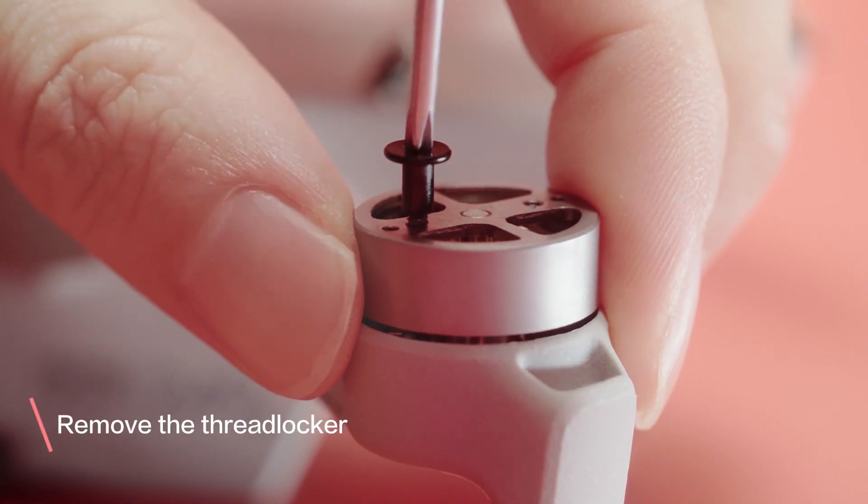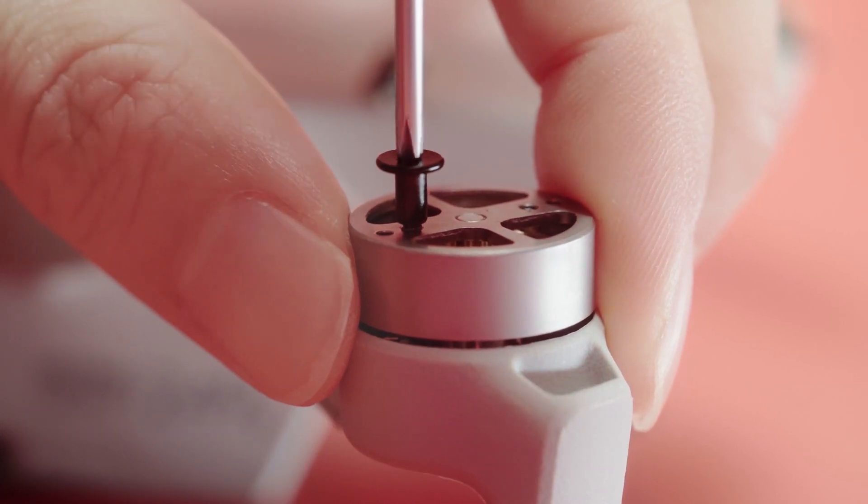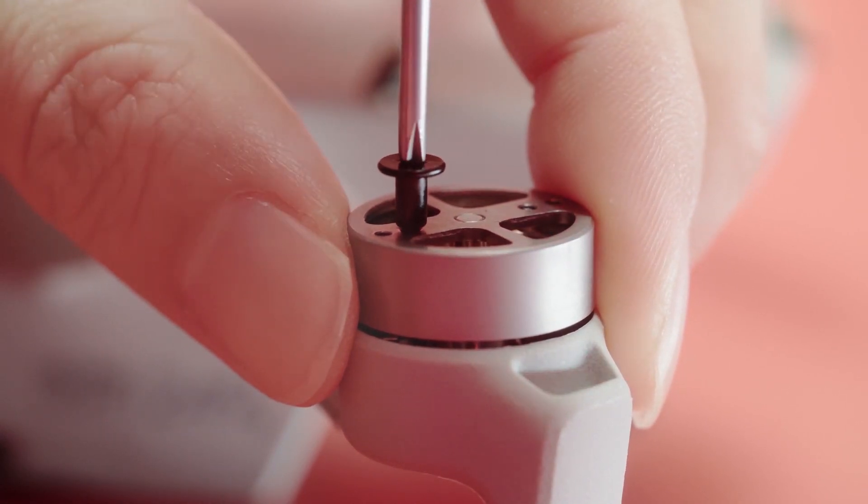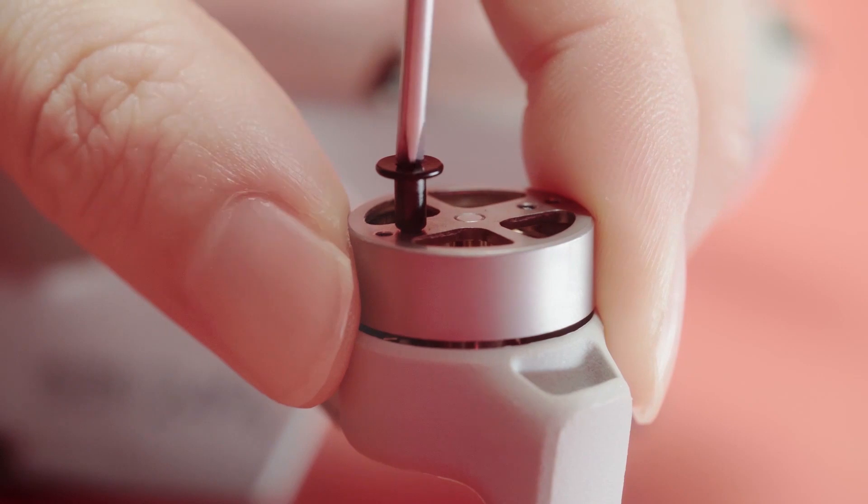Before attaching the new propellers, remove the blue thread locker in the screw hole. You can screw the old screws in and out multiple times to clean the screw hole.